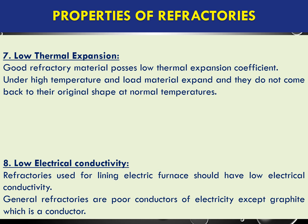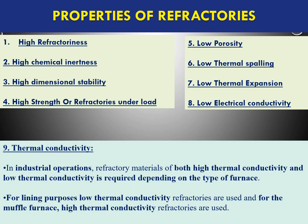The eighth property is low electrical conductivity. Refractory materials should act as insulators and not allow the passage of electrical current. Therefore, a good refractory metal should have low electrical conductivity. To summarize, the properties that should be high are: refractoriness, chemical inertness, dimensional stability, and strength under load.